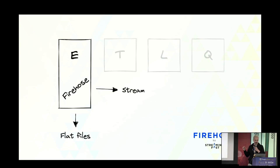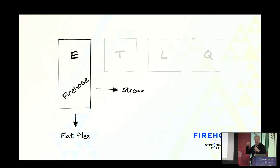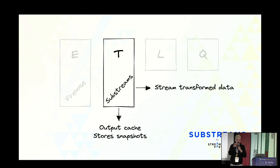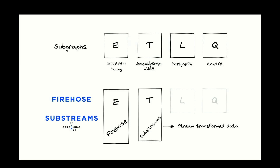StreamingFast rethought the whole thing from the beginning. The JSON-RPC interface is not the best for getting data out quickly in bulk, so they came up with Firehose — writing raw block data to flat files as quickly as possible so it can be parallelized and streamed wherever you want. Then those raw blocks stream out and are transformed by Substreams, which is a map-reduce parallelizable technology that consumes raw block data and produces a refined stream. Firehose and Substreams cover the E and T of the ETLQ pipeline.